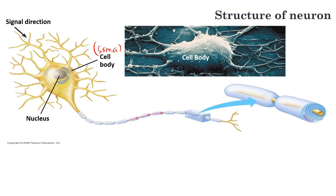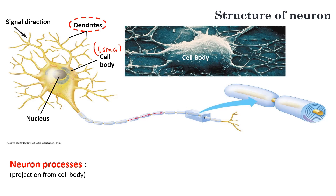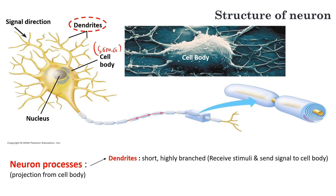There are two types of neuron processes. Neuron processes are finger-like projections from the cell body that are able to conduct and transmit signals. The first one is dendrites. They are typically short and highly branched. Numerous dendrites extend from the cell body and function in receiving stimuli and sending signals to the cell body.